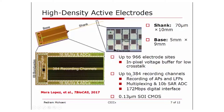Up to 384 recording channels are placed on the back end of the probe in a five-millimeter by nine-millimeter area. All recording channels are reconfigurable for recording both action potentials and local field potentials. Multiplexing in the back end reduces the number of signal lines coming out of the probe, with 10-bit ADC conversion and ultimately a very high data rate of 172 megabits per second interface to transfer all data from the probe to the outside world.